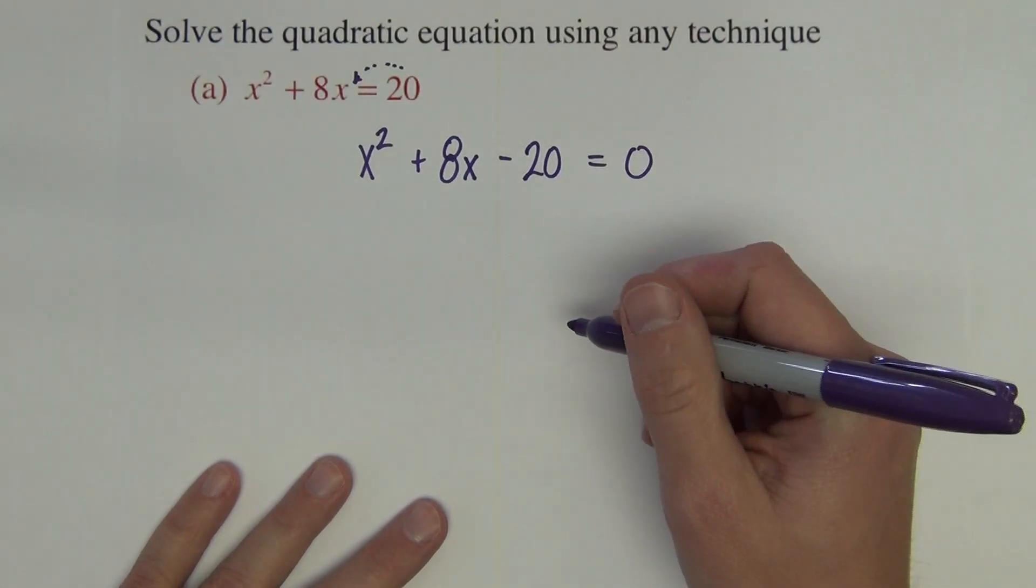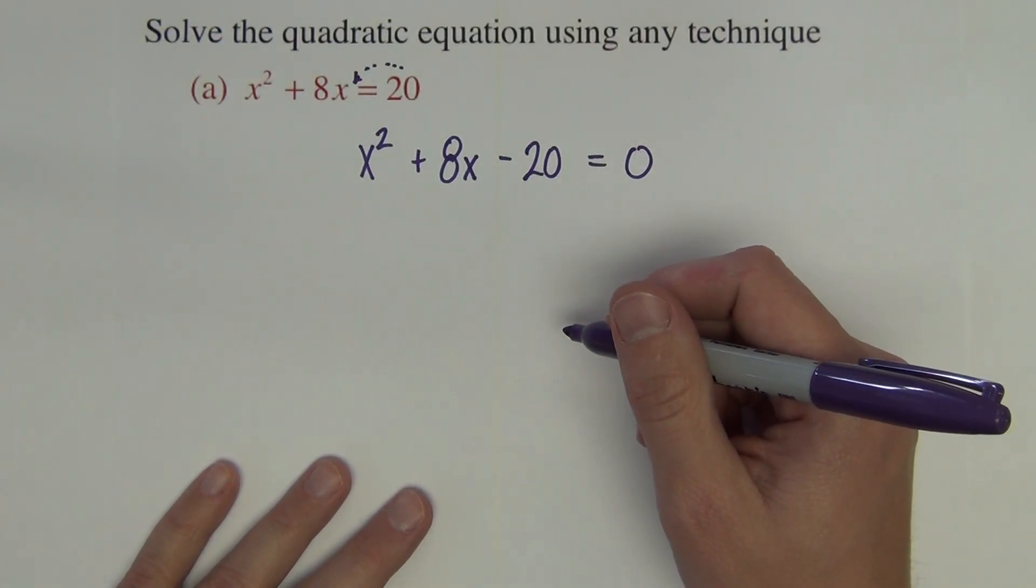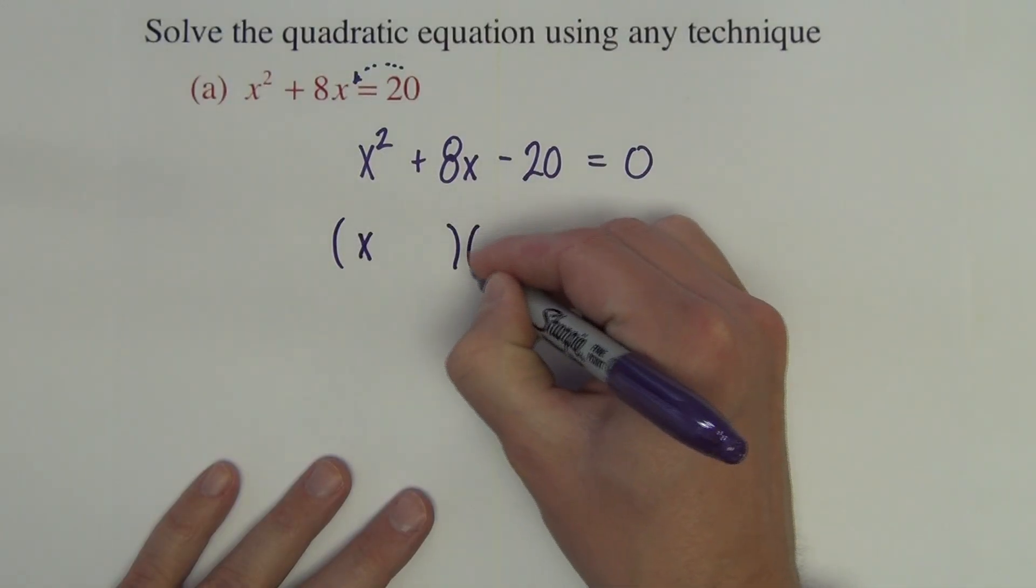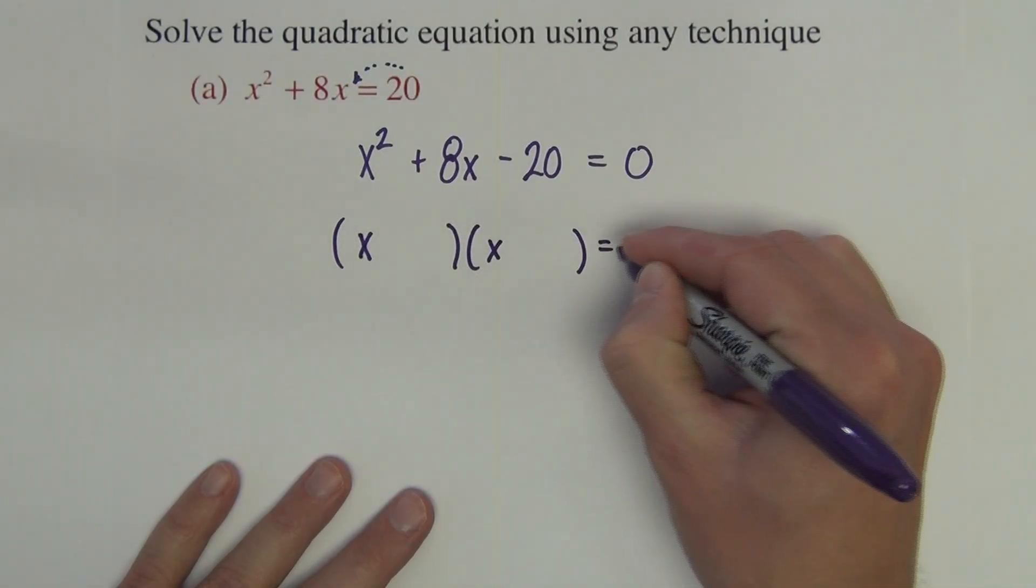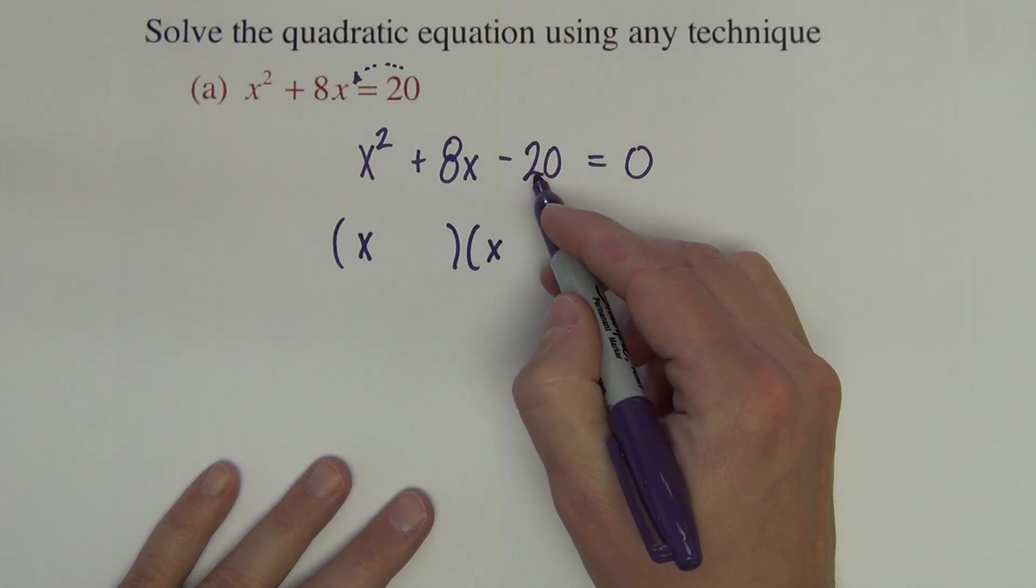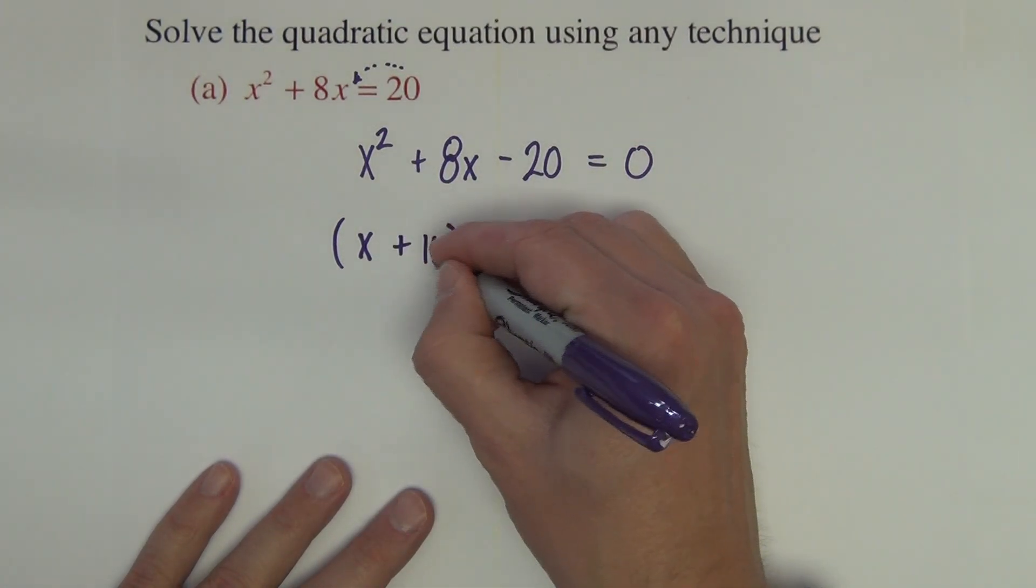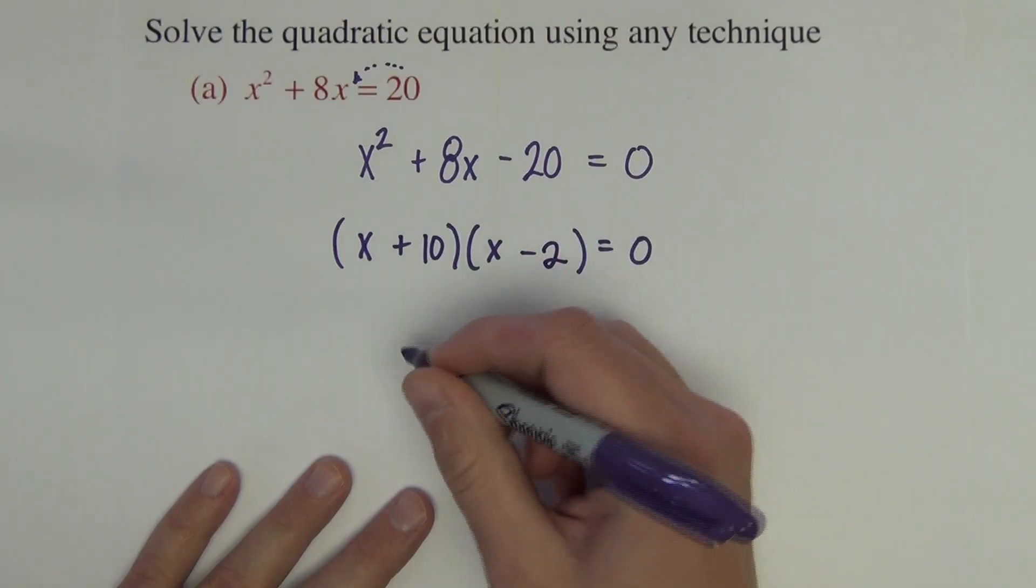Once it equals zero, now I can examine it and determine if it can factor. Okay, so can we multiply two numbers to negative 20 and add those numbers to 8? And the answer is yes if we use positive 10 and negative 2.